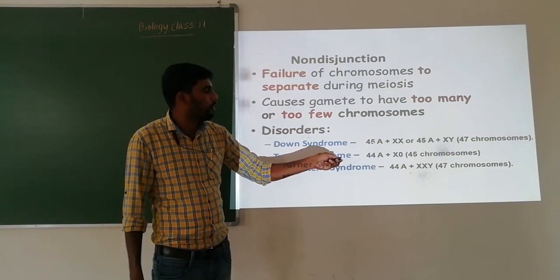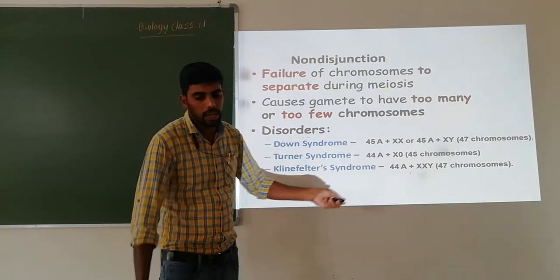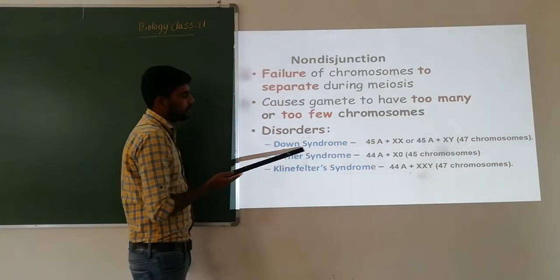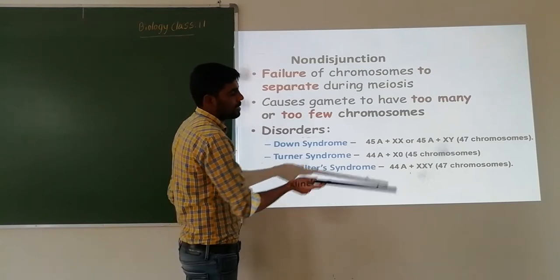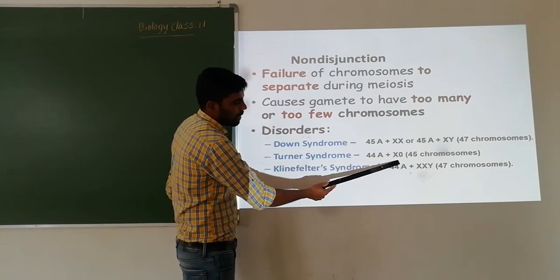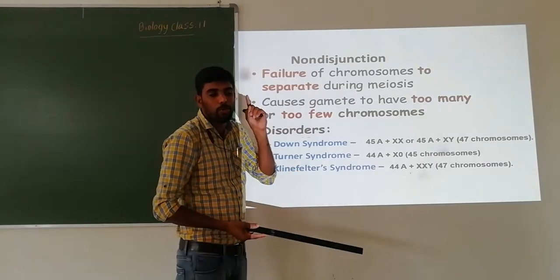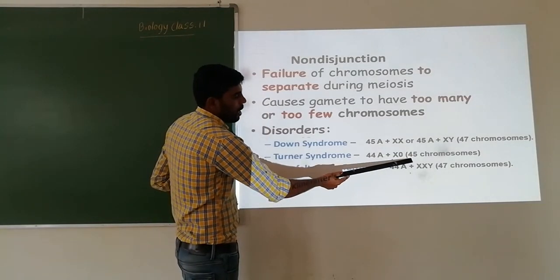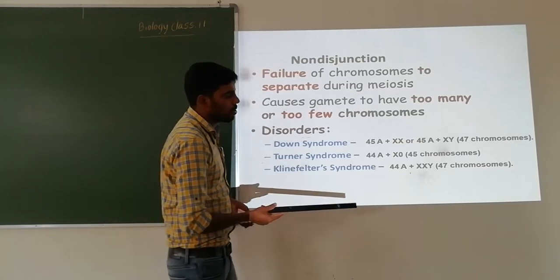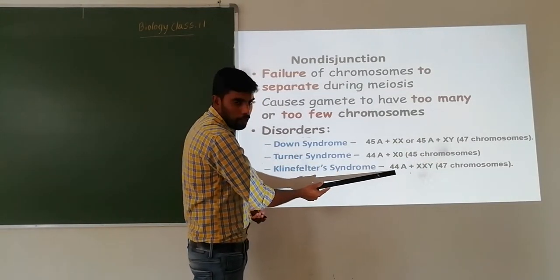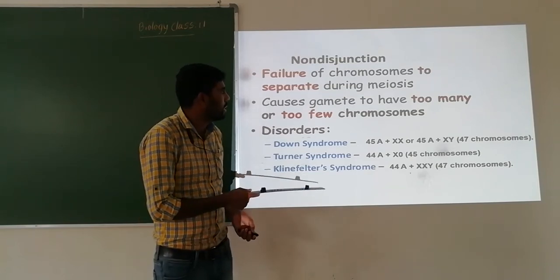In Down syndrome, 47 chromosomes are present — in chromosome 21 there is one extra chromosome, giving 47 total. In Turner syndrome, one chromosome decreases, especially the sex chromosome: 44 autosomes are normal but the sex chromosome is X0 (only one X), giving 45 chromosomes total. In Klinefelter syndrome, 47 chromosomes are present: 44 autosomes are normal but there is one extra sex chromosome — XXY.